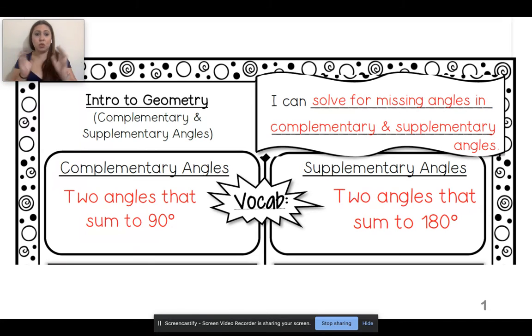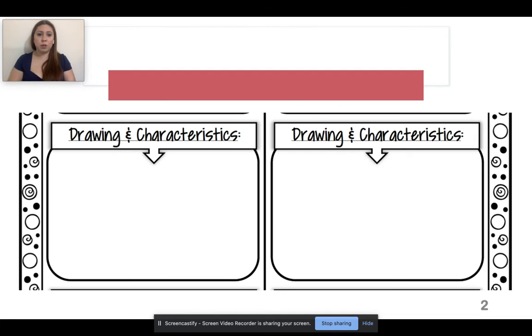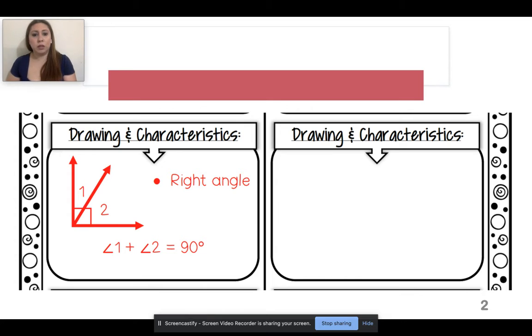For supplementary, you're going to add them both together and it's going to be 180 degrees. So complementary is 90 degrees, supplementary is 180 degrees. Complementary will look like a 90-degree right angle. Supplementary will look like a line.